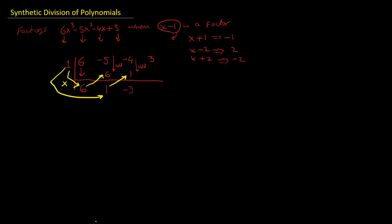1 multiplied by 1 is 1. We add again — not subtracting; that is a common mistake students make. So minus 4 plus 1 gives minus 3. Now multiply 1 with minus 3 and put it there, giving minus 3. Add again: 3 plus minus 3 is 0. This 0 is the remainder, which confirms that x minus 1 is indeed a factor.